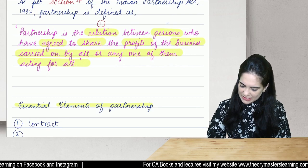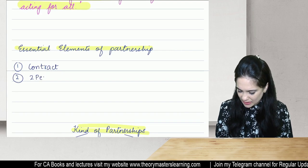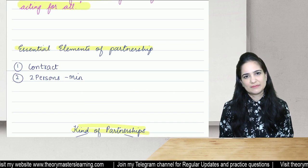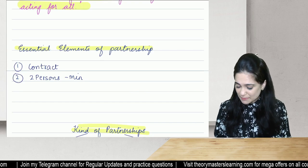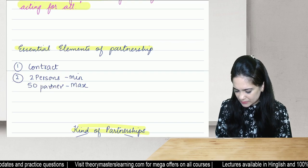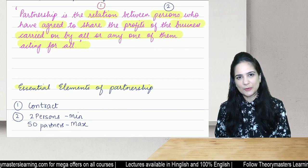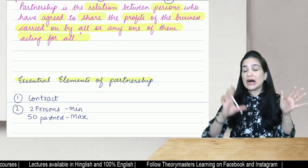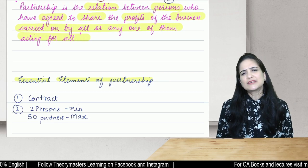The second essential element is that we need minimum two persons to start a partnership business. If you are doing business alone it is a proprietary business, but when two or more persons do business together it can be termed a partnership. The maximum limit is 50 partners. If you want more than 50 partners you cannot do business in partnership — instead you will have to incorporate a company.